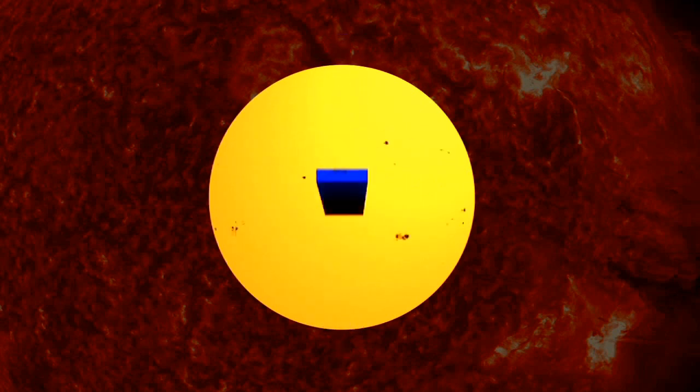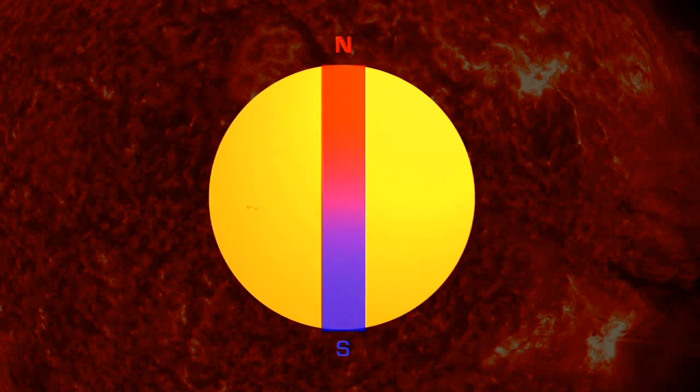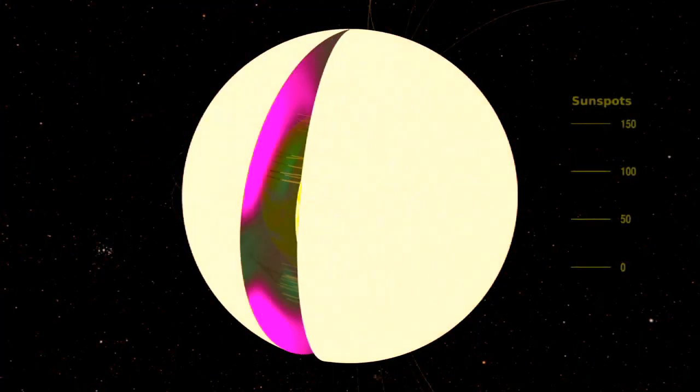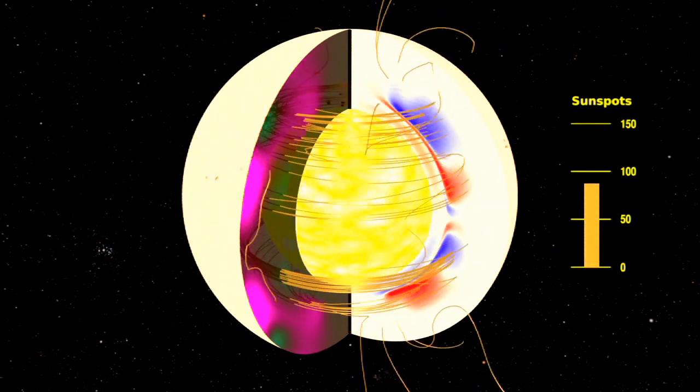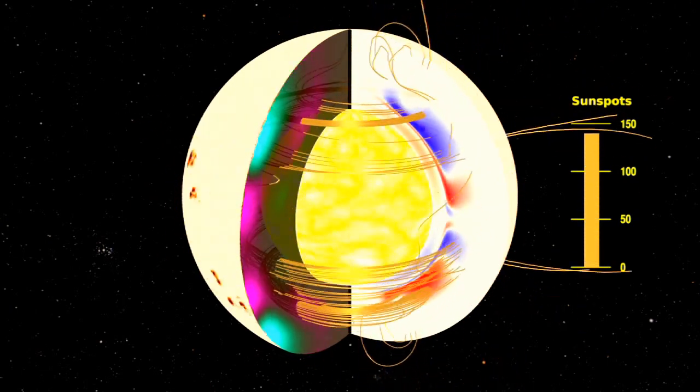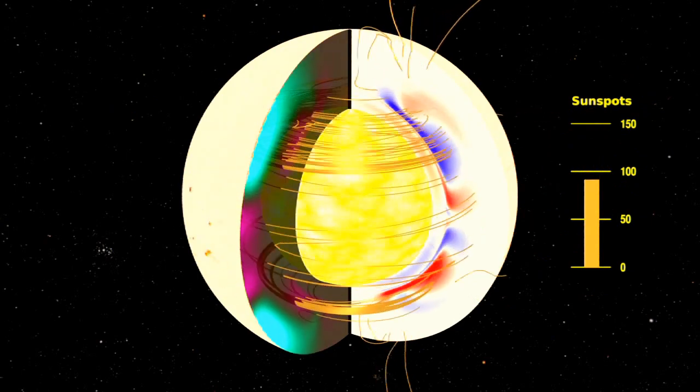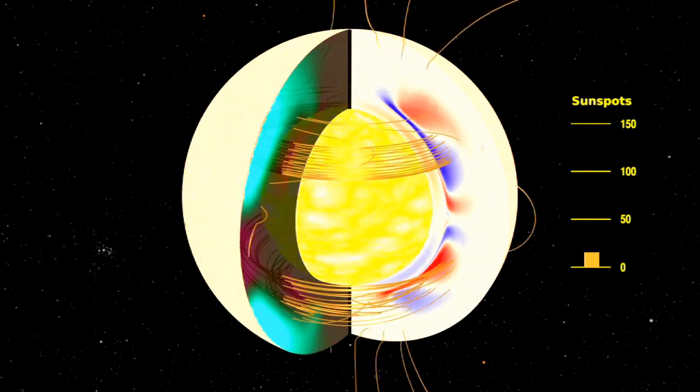So every 22 years, the poles return to the position where they started the cycle. The flip is due to the complex movement of magnetic fields inside the Sun that are constantly stretching, twisting, and crossing as solar material bubbles up from the Sun's core. But the exact pattern of movements is not yet mapped out.